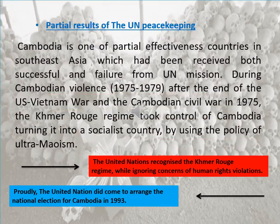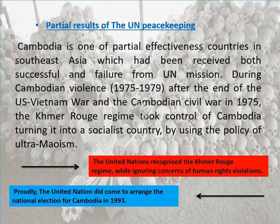After discussing the successful and failed accomplishments, let's look at the last type: the partial result of UN peacekeeping. Cambodia is one of the countries in Southeast Asia that received both successful and failed outcomes from the UN mission. During Cambodian violence from 1975 to 1979, after the end of the US-Vietnam War and the Cambodian civil war in 1975, the Khmer Rouge regime took control of Cambodia.